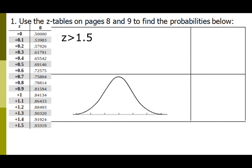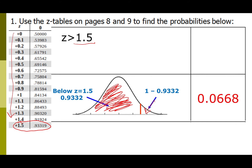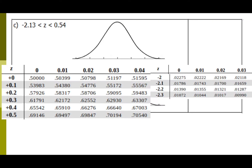What if I want z greater than 1.5? My table gives me the shaded area to the left, so I look up 1.5 and get 0.9332. Since the whole area under the curve is 1, I do 1 minus 0.9332, which gives me 0.0668, or about 7 percent.